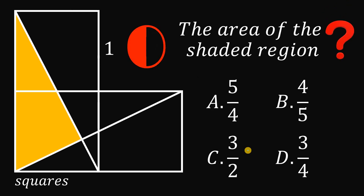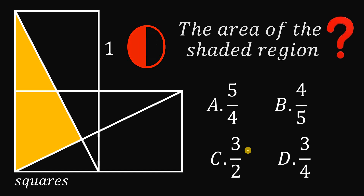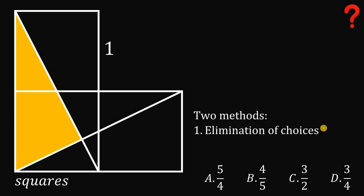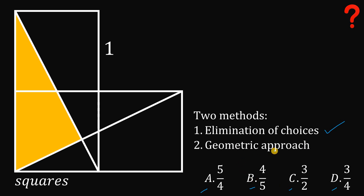Now let's answer this question together. To solve it, I'll provide two possible methods. The first one is the elimination of choices — this method is very powerful because with four choices, if we can eliminate three of them, the remaining one is the correct answer. The second method is, of course, the geometric approach.